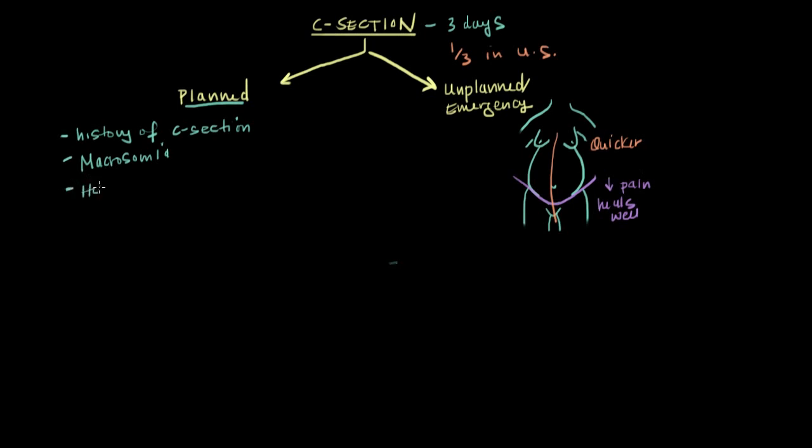Another indication is if the mom has an infection such as herpes or HIV, infections that can spread to the baby as it's passing through the vaginal canal. If the woman is carrying more than two babies, or if the mom has placenta previa, in which case the placenta blocks the way to the vagina so the baby can't exit. And any type of mechanical obstruction to delivery, such as a uterine fibroid or a displaced pelvic fracture.